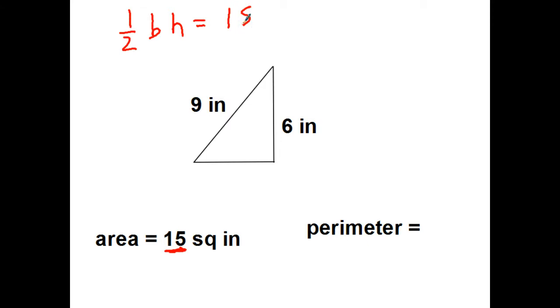What number do I know right now? I know my height. So half the base times 6 equals 15. Well, I can do half of 6. That's 3. So the base times 3 equals 15. So the base must be 15 divided by 3, which is 5.